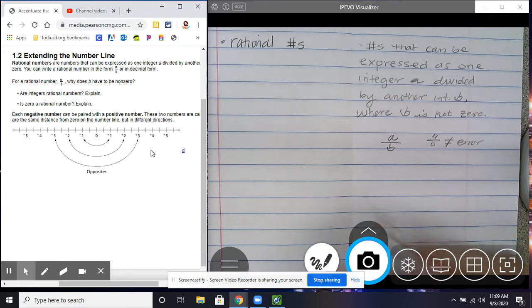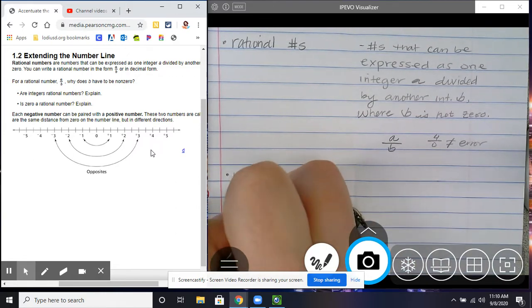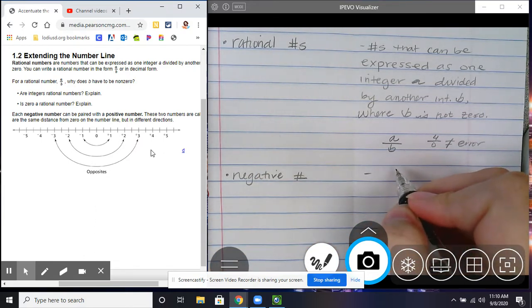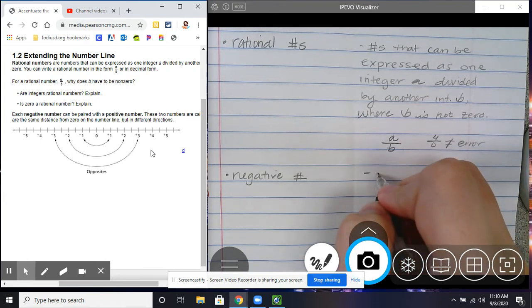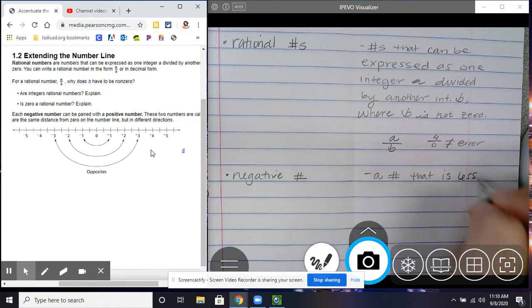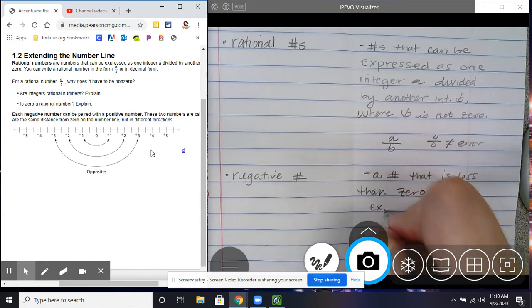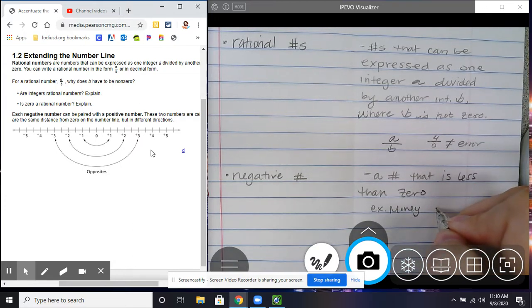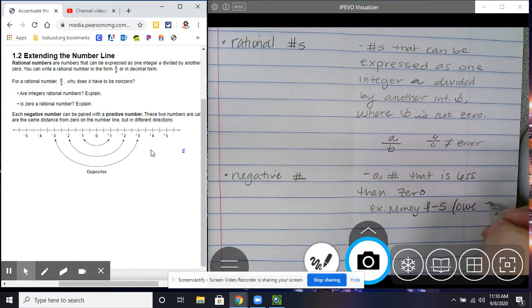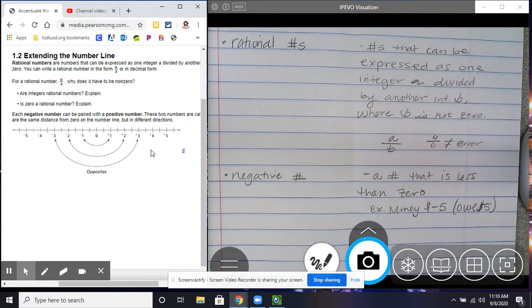And then we have a negative number, which is a number that is less than 0. So like in money, negative $5 means that you owe $5. That's a dollar sign. Not that you could tell, but that's what that is.